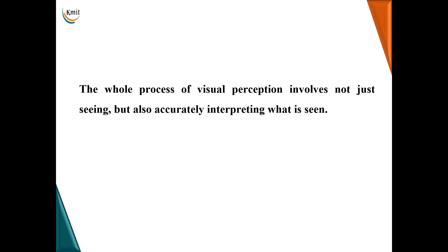So, the clear idea of visual perception is that the whole process involves not just seeing but also accurately interpreting what is seen. That is, capturing the image as well as interpreting that captured image is what we call visual perception.